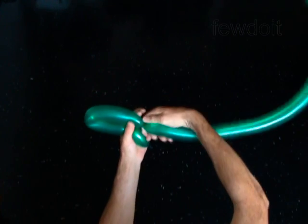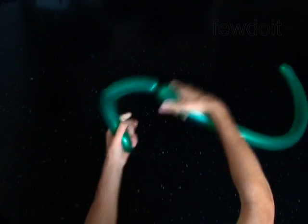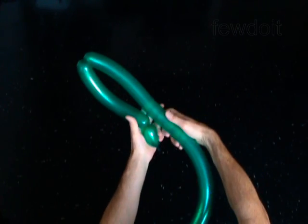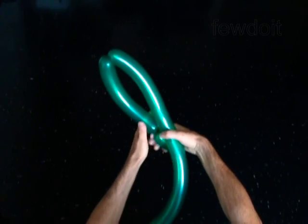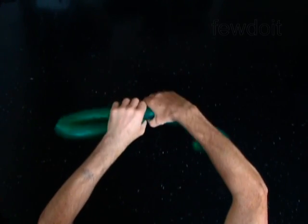Twist the third bubble of the same size as the second bubble. Lock both ends of the chain of the last two bubbles in one lock twist.